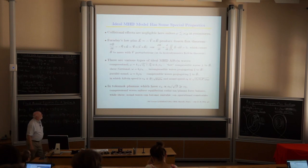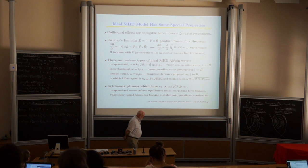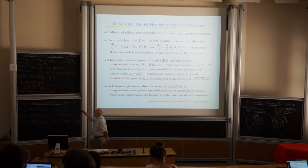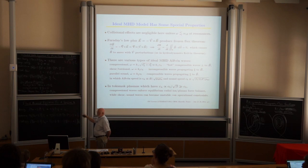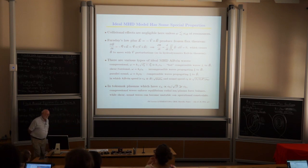In ideal MHD, we neglect all those colored terms. The electric field to lowest order is just V cross B — this is a two-fluid effect that Javier Garbet was discussing. The diamagnetic flow term is neglected, and it operates on a slower timescale than regular ideal MHD.